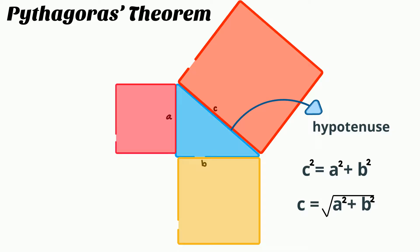Let's have a look at how we can use Pythagoras's theorem to find missing lengths in right-angled triangles.